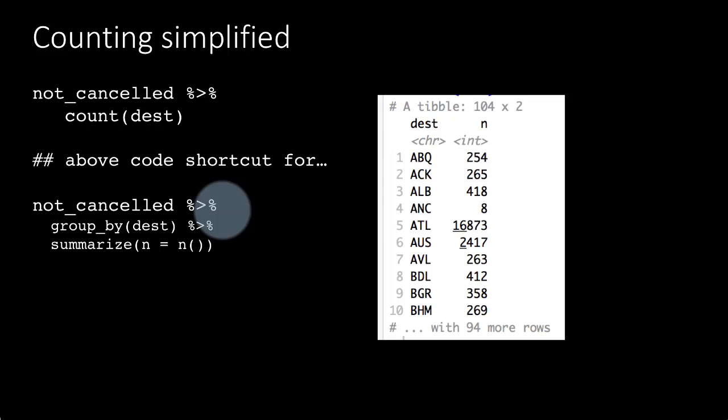Notice that when you count destination the column number comes out as n. That's the default that R uses. The column number just comes out as n. And here of course when we did it manually we could have given the column name any name, but we chose to give n.